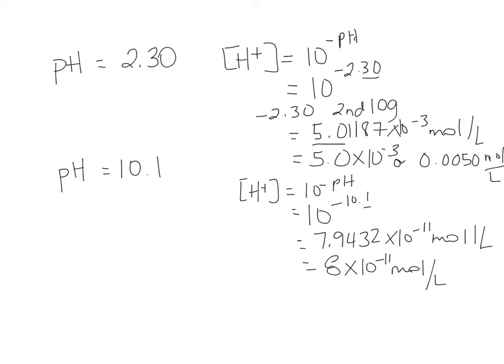Let's look at these values. A pH of 2.3 tells us we have an acid, so we'd expect the hydrogen ion concentration to be fairly large — and it is: 5 × 10⁻³. The pH of 10.1 is basic, so the hydrogen ion concentration relative to pH 2.3 should be really small, and it is: 8 × 10⁻¹¹ mol/L. So when you have a low pH, you have a relatively large amount of H⁺, and if the pH is basic, you have a relatively small amount of H⁺.